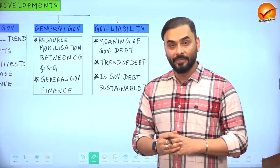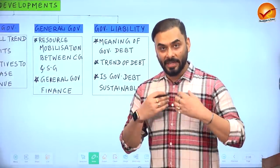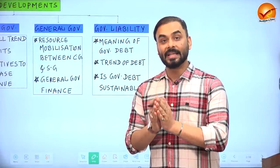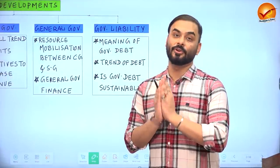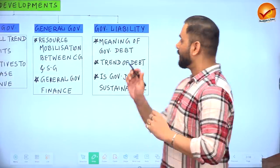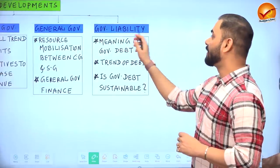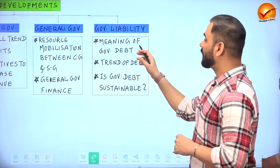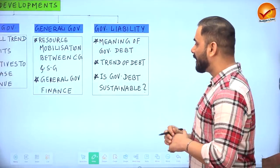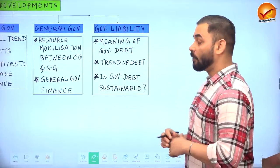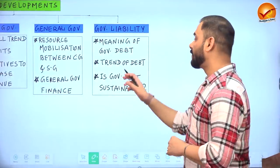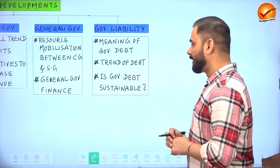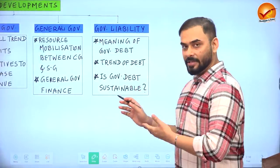Towards the end of today's lecture, we will look at how the Government of India borrows money and whether that borrowing is sustainable — referred to as government liability. We will cover the meaning of liability, different types of government liabilities, the trend of debt, and an analysis of how long a government can continue to borrow from the market.